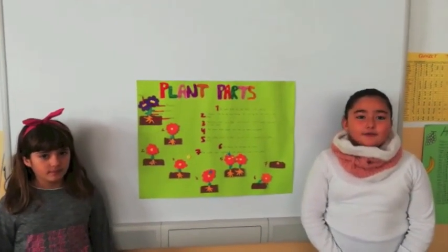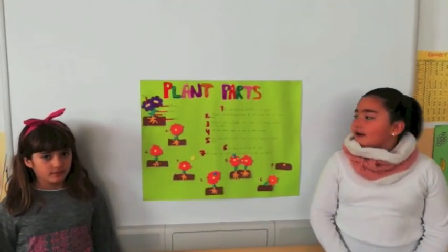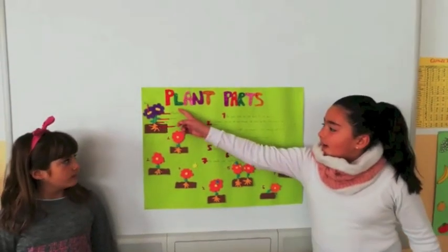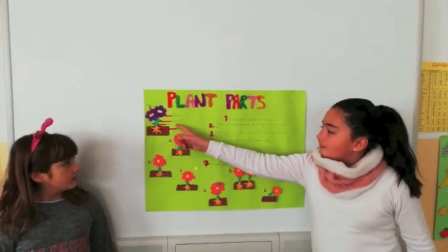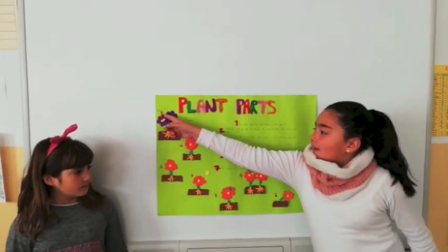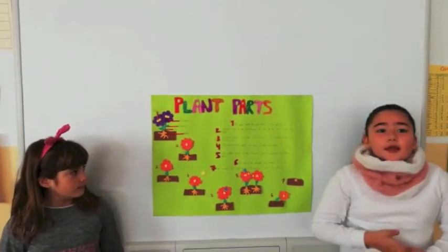The parts of a plant are flowers, leaves, roots, stems and pollen.